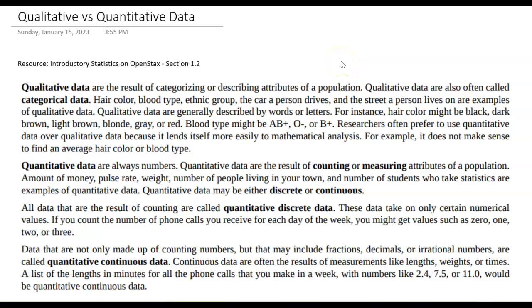In this video, we're going to be looking at the two different types of data that we will be studying in our elementary statistics course. Qualitative data are the result of categories or describing attributes of a population. You can also call those categorical. Hair color, blood type, ethnicity, the car you drive, the street a person lives on are all examples of qualitative data.